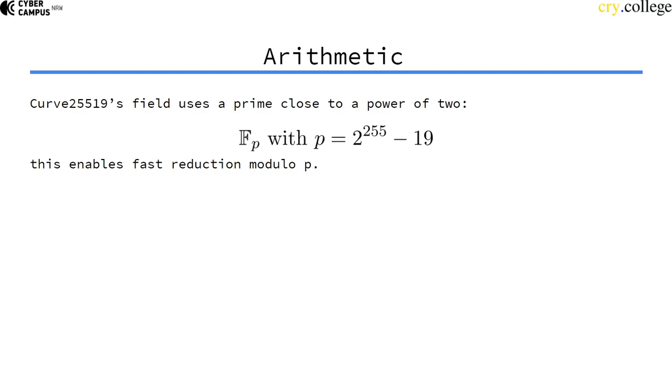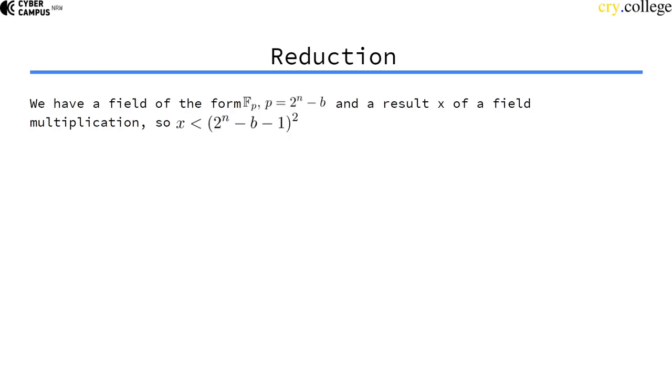Optimized crypto implementations are not really in scope for this course, but I still want to give you an intuition on why that is so fast. So imagine we have a finite field Fp, and the prime number is close to the power of two.